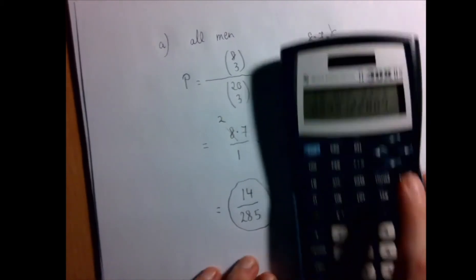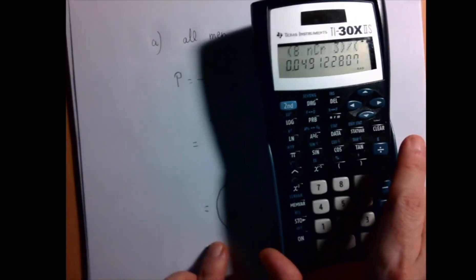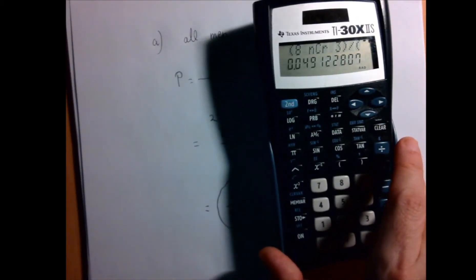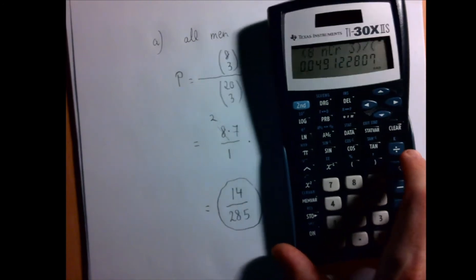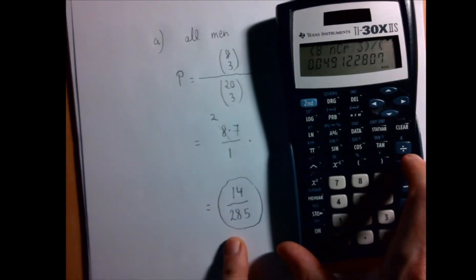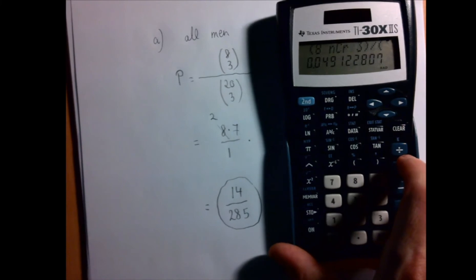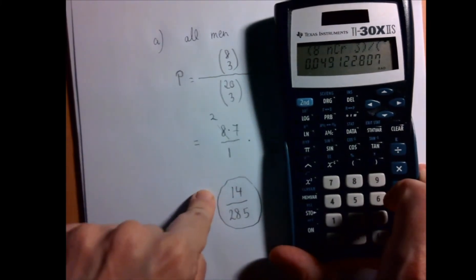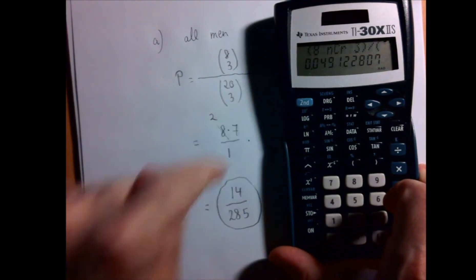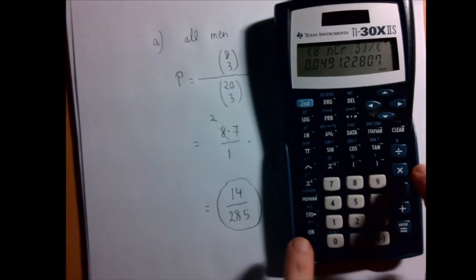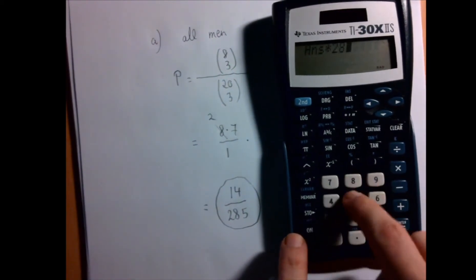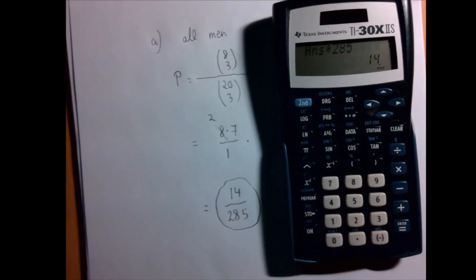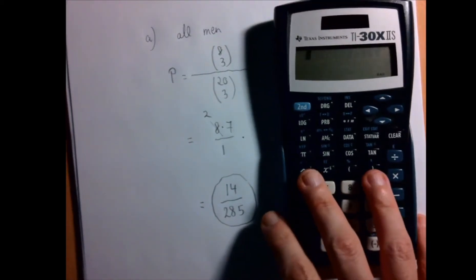Now we have a decimal here. We have two options. We can either write our answer as a decimal, 14 divided by 285, and compare the two decimals. Or for fun, if these two numbers are equal, then if you multiply this number by 285, we should get 14. Times 285. So our answer is correct.